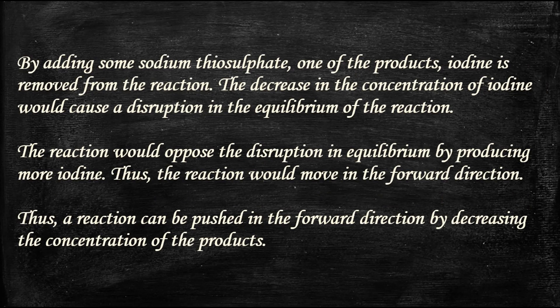By adding some sodium thiosulfate, one of the products — iodine — is removed from the reaction. The decrease in the concentration of iodine would cause a disruption in the equilibrium of the reaction. The reaction would oppose the disruption by producing more iodine. Thus, the reaction would move in the forward direction. A reaction can be pushed in the forward direction by decreasing the concentration of the products.